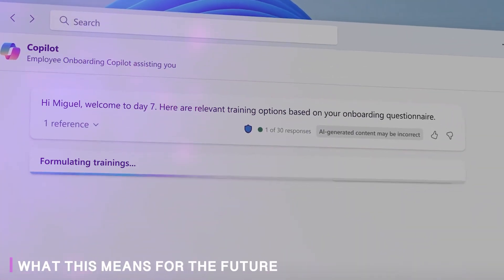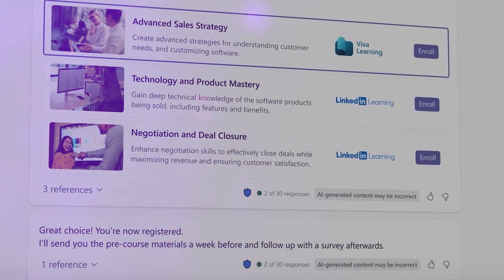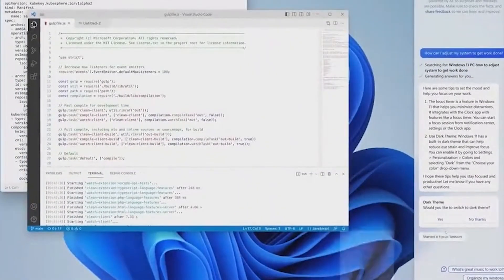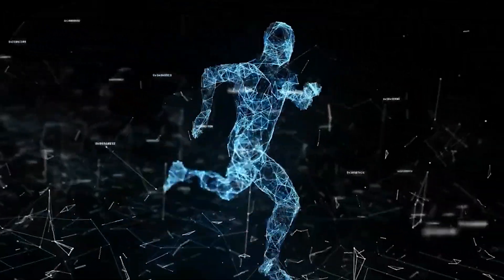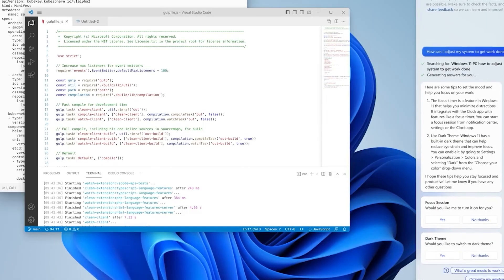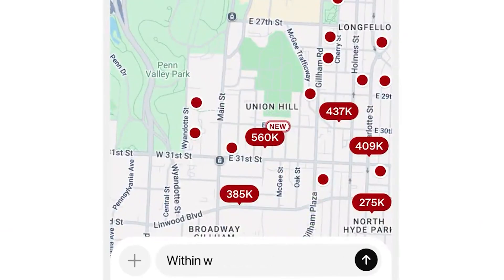What this means for the future. Despite these limitations, the potential breakthrough in continuous learning represents a fundamental shift in how we think about artificial intelligence. For the first time, we're seeing concrete progress toward AI systems that can grow and evolve rather than remaining forever frozen at their moment of creation. If these advances prove scalable and practical, we could see AI systems that become more capable over time through interaction and experience.